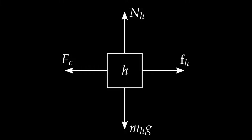I can go through the horse's analysis faster because it turns out to be very similar to the cart. Does the horse have a weight? Yes. I draw an arrow directed downward on the horse free body diagram and label it mh·g — the mass of the horse times g — being careful to use mh to distinguish it from the mass of the cart.